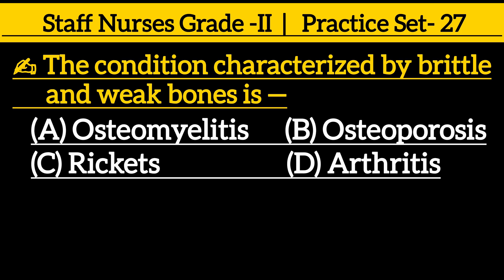Next one: the condition characterized by brittle and weak bones is — option A: Osteomyelitis, option B: Osteoporosis, option C: Rickets, option D: Arthritis.